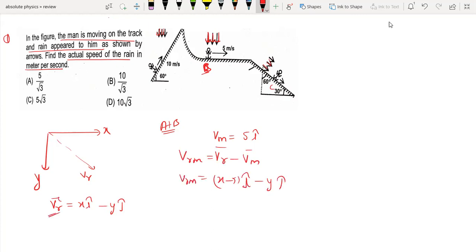Velocity of rain with respect to man is vertical, so it has only the j component. The x component equals zero, which means x = 5.